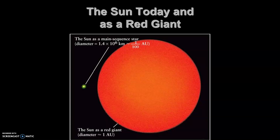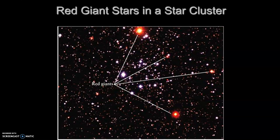Looking at our Sun today versus a red giant: the Sun as it is now is very small in comparison. Currently it is about 1/100 astronomical units in size, whereas as a red giant it would be equivalent to 1 astronomical unit — a huge difference in size. Red giant stars can be seen in some clusters, and as they form, remember that we're switching from a hydrogen-fusing core to a helium-fusing core.